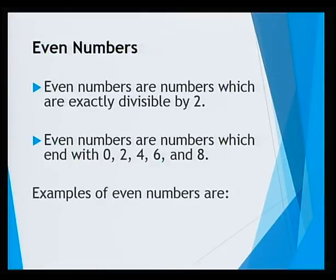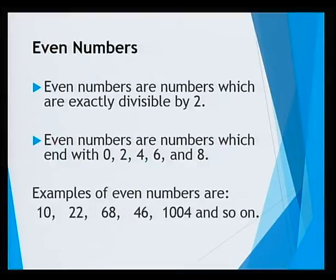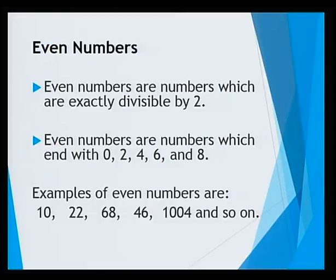Let us see some examples of even numbers. So 10, 22, 68 — all these are even numbers because when I divide by 2, the remainder is 0. Or I can also say, because they are ending with 0, 2, or 8, for example, they will be even numbers.